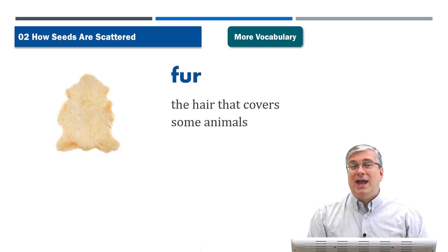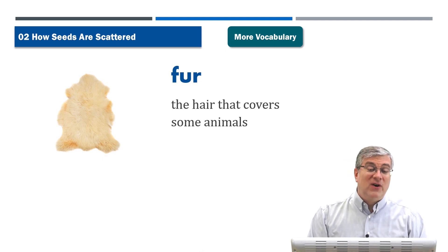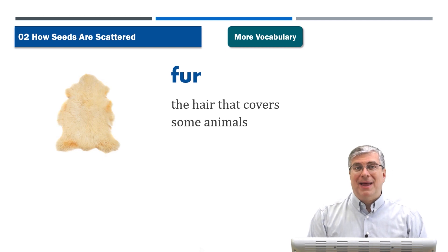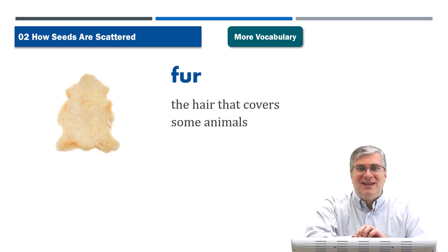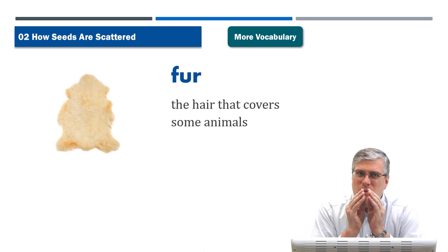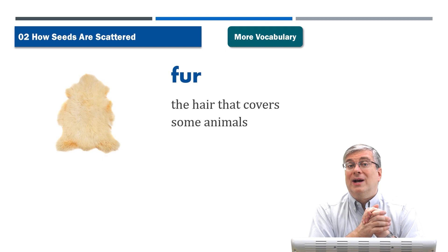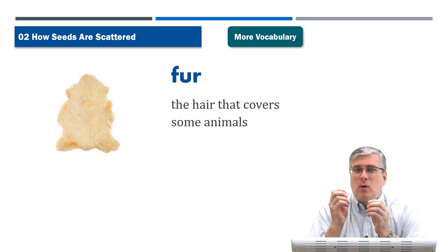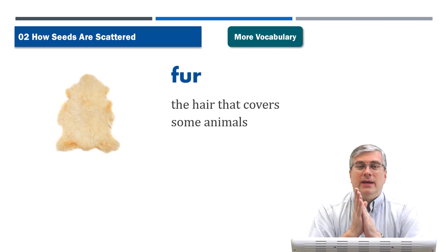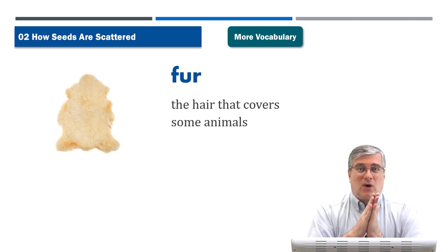Next word is fur. First we had burr, now we have fur. Fur is the hair that covers some animals. I've got kind of hairy arms but don't call this fur — it's not that thick. If it's really a lot of hair growing closely together and you cannot see the skin, we call that fur. Look at your dog or cat — they have very thick hair growing out of their skin; we call that fur. Not all animals have fur, but many mammals do. Humans don't have fur, so don't say that about a human being.